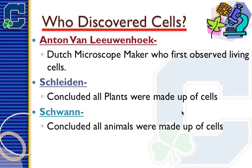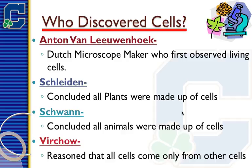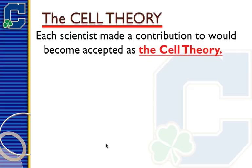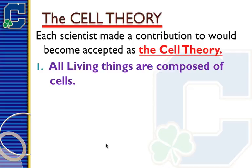Schwann concluded that all animals are made up of cells, similar to Schleiden. To help remember: Schwann sounds like swan, and swans are animals — so he's the one who concluded that about animals. And then Virchow is credited with reasoning that all cells come from other cells. Put all these things together and you get something called the cell theory.